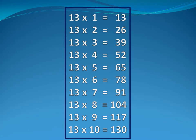Now thirteen table. Thirteen one is thirteen. Thirteen two is twenty-six. Thirteen three is thirty-nine. Thirteen four is fifty-two.